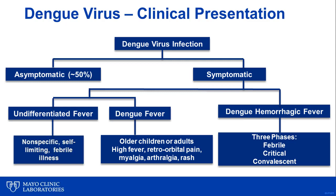Some of the warning signs for progression to plasma leakage include increased capillary permeability, elevated hematocrit, pleural effusion, and hypovolemia. If these signs are noted and vascular permeability is not countered, patients can progress to shock, organ failure, and ultimately death. Finally, for patients who survive this stage, the third phase of dengue hemorrhagic fever is the convalescent phase, at which time fluids that have leaked into the intravascular space are reabsorbed.